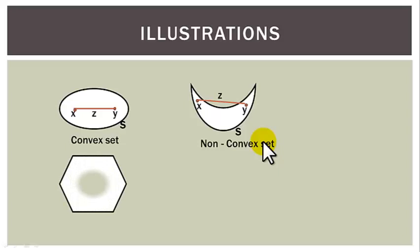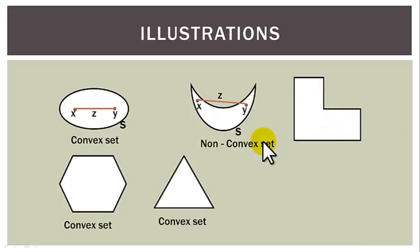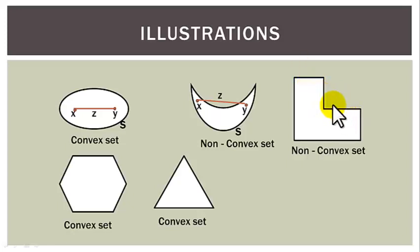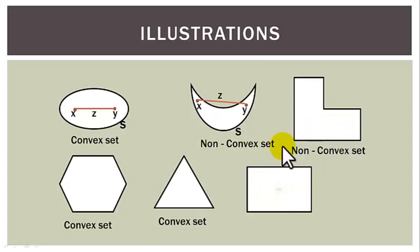Further, consider this shape: the set of all points in a regular hexagon is a convex set. The set of points inside a triangle is also a convex set. Now look at this L-shape — the set of points in this shape is a non-convex set, because we can take a point here and another point here, and the line segment joining the two points will not lie entirely in this set. Finally, the set of all points inside a rectangle is a convex set.